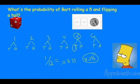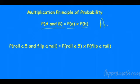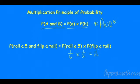That leads us to the multiplication principle of probability. If we're given two events and we want both to happen, the key word is 'and.' We take the probability of event A and multiply it by the probability of event B. The probability of rolling a five and flipping a tail: rolling a five is one in six, flipping a tail is one in two. One sixth times one half equals one twelfth — the same answer we found the long way, much nicer with this shortcut.